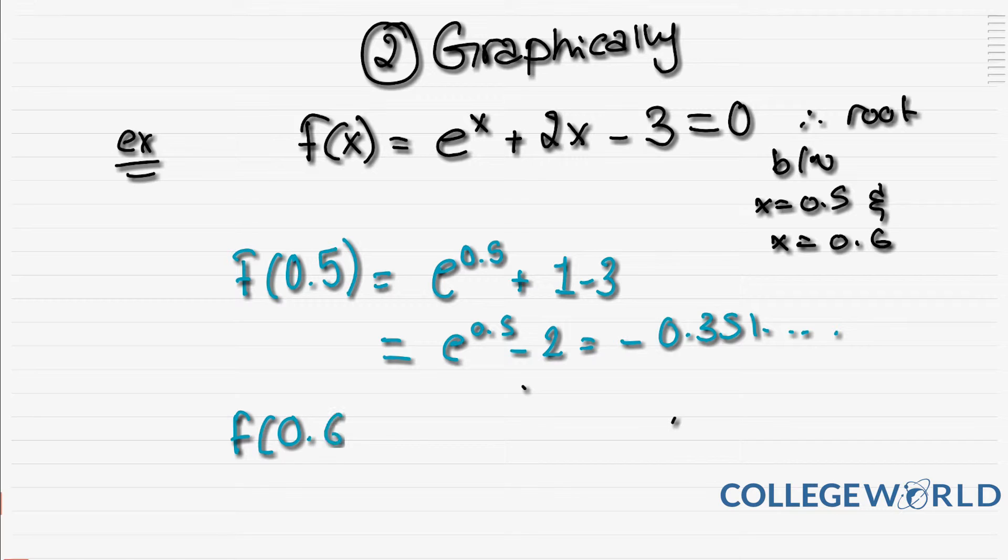Then you're going to do the same for the second part where it's 0.6. You will find that it's going to give you e^0.6 + 1.2 - 3, and that would give you 0.0222, etc.